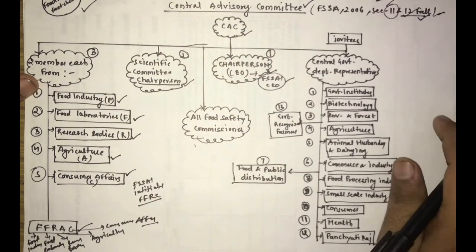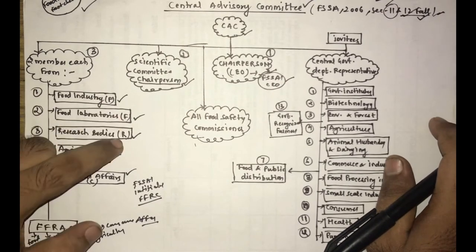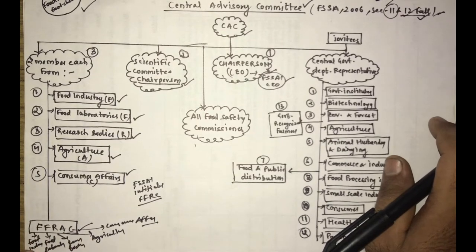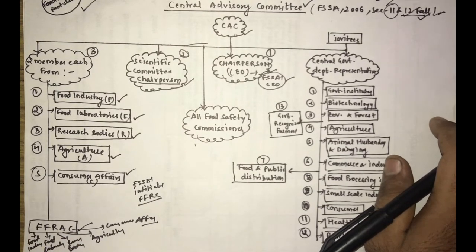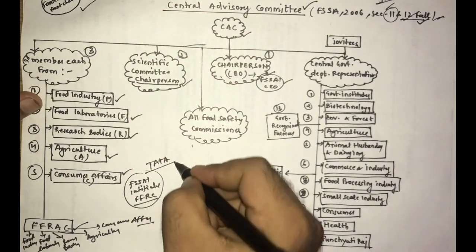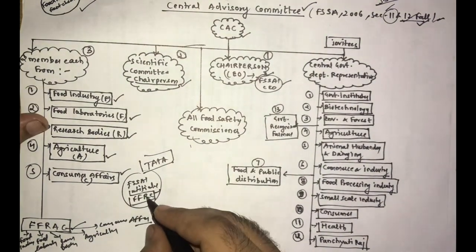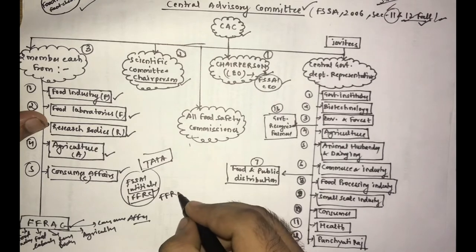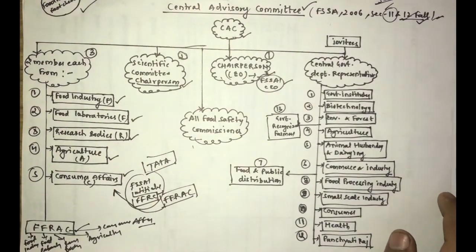Now, I have made a trick for these five. How can you remember? FFRAC. The first F means Food Industry, the second F means Food Laboratory, R means Research Body, A means Agriculture, C means Consumer Affairs. You can also remember that the FSSAI initiative is Fortification. FSSAI has created an organization called Food Fortification Research Center, FFRAC. So you remember that it is FFRAC. Now what is FFRAC? You can link the FFRAC.